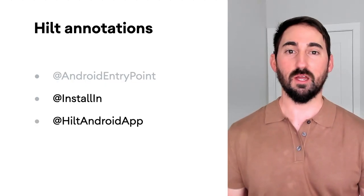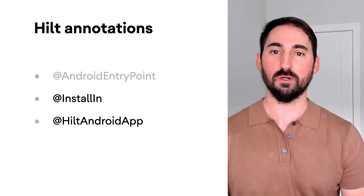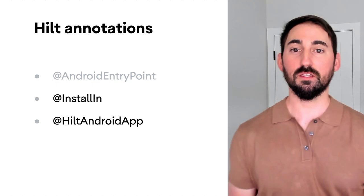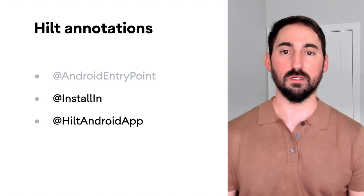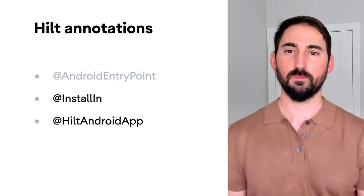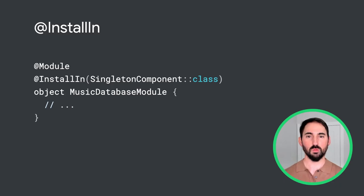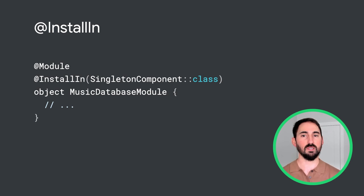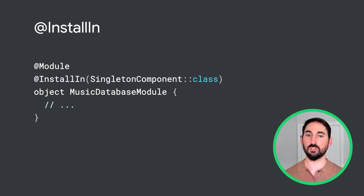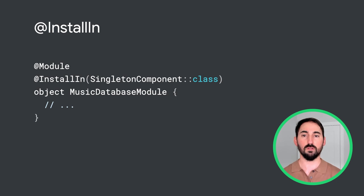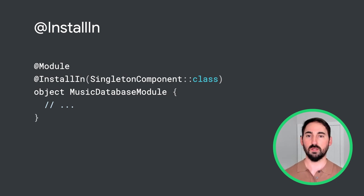Now that we've seen how Android Entry Point works, let's look at the next annotation on the list: InstallIn. As a quick review, InstallIn is used to indicate which component a module or entry point should be installed into. For example, here we've installed the MusicDatabase module into the Singleton component.